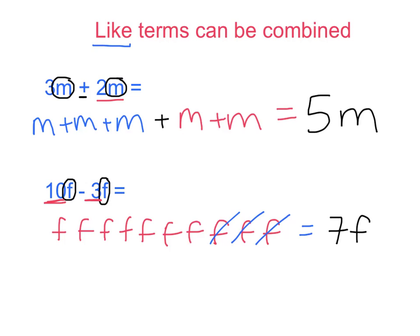Or I can just see that 10 minus 3 gives me 7 and that means that I have a total of 7f's left over.